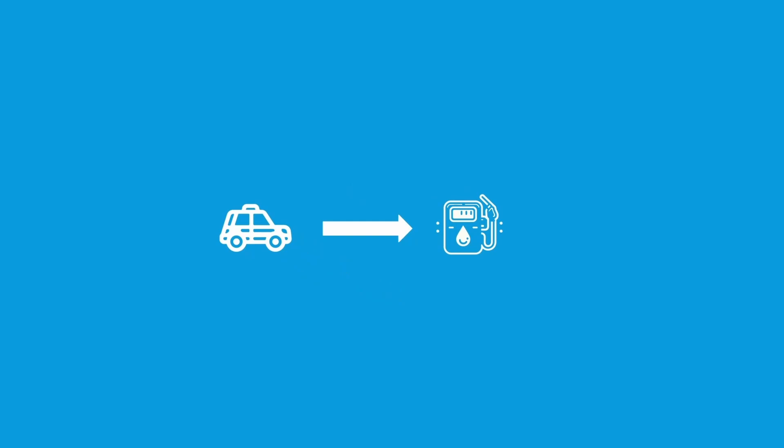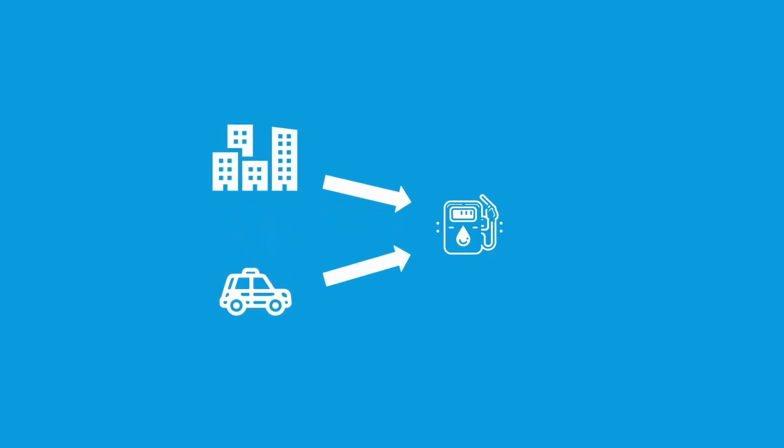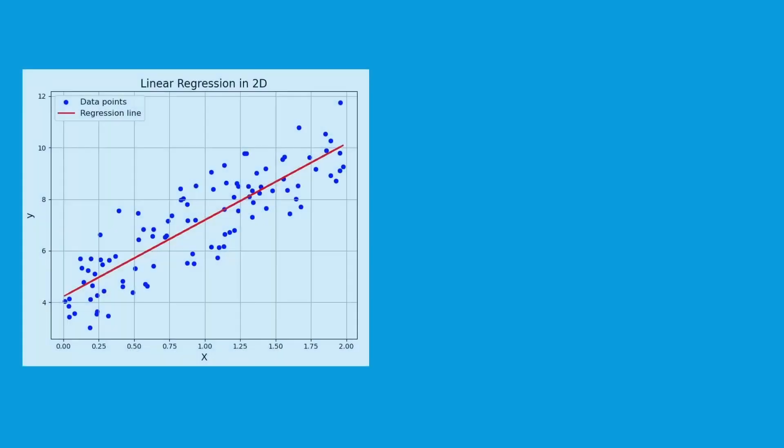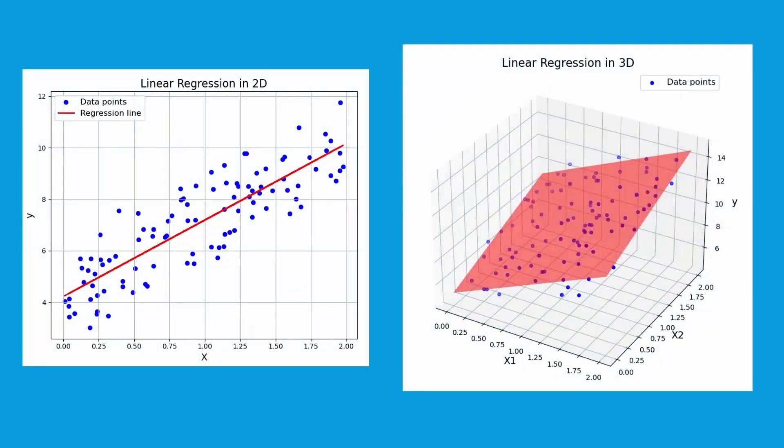So far, we've been looking at very simple cases with one input and one output. But what if there are multiple factors involved? This is called multiple linear regression. For example, we could include the percentage of time spent driving in the city in our trip data. In this case, instead of a line, we fit a plane to the data points.